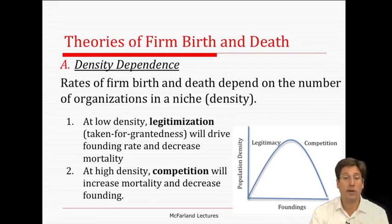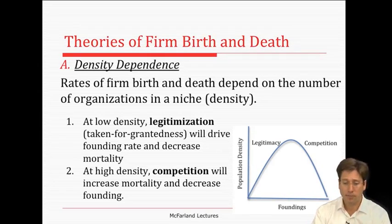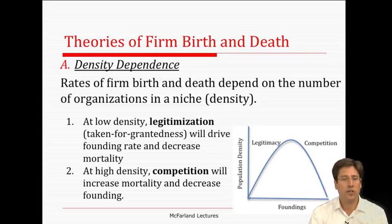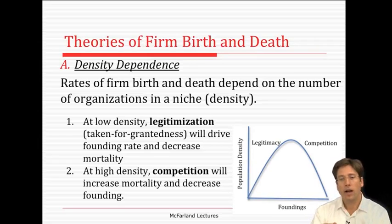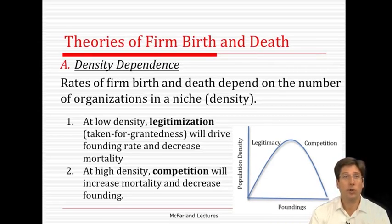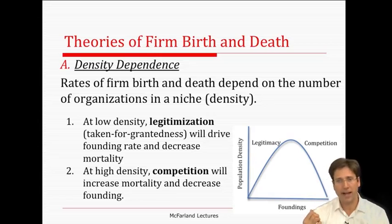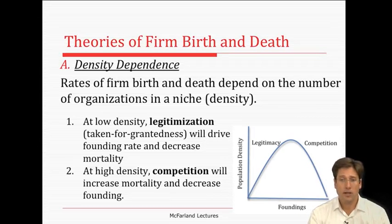This inverted U-curve shows the x-axis as the number of foundings and the y-axis as the population density. Legitimacy here refers to the taken-for-grantedness of an organizational form — the more legitimate the form, the easier it is to acquire resources, and the mortality rate decreases. In terms of competition, that refers to organizational forms seeking the same limited resources in a niche. When there are few resources to go around, competition grows intense, so the founding rate starts to drop. You see that peak on the backside of the U-curve, and as it declines, founding rates drop and the mortality rate increases. Because of this, competition is inversely related to density. That's basically the theory of density dependence.